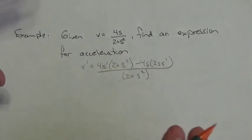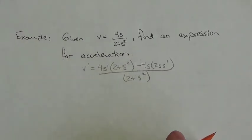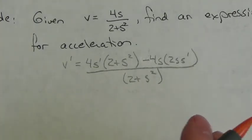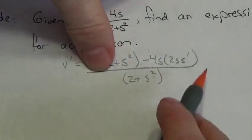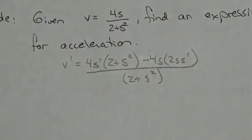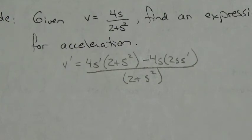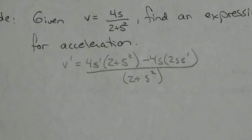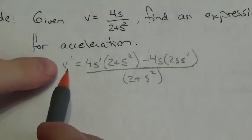The denominator is going to be (2 + s²). Frequently when people do a question like this, what they forget is the s′ terms — they forget to include those. Please watch out for that. But that's not the only issue we have to address.